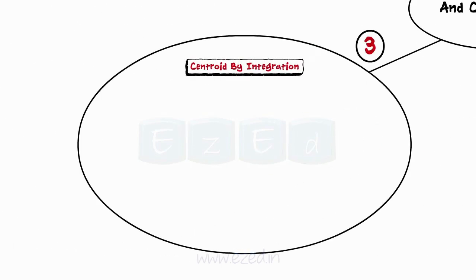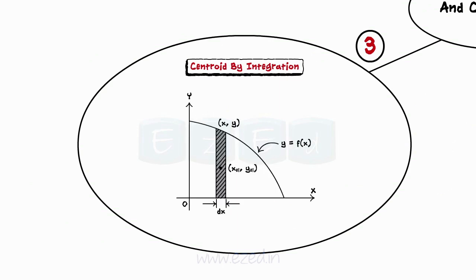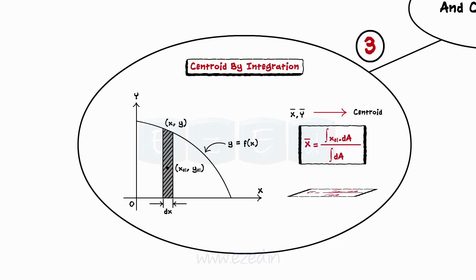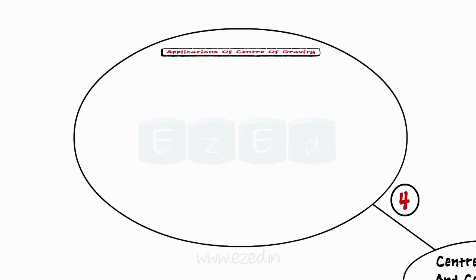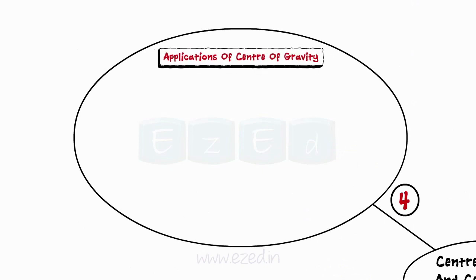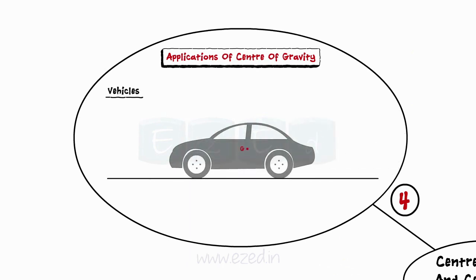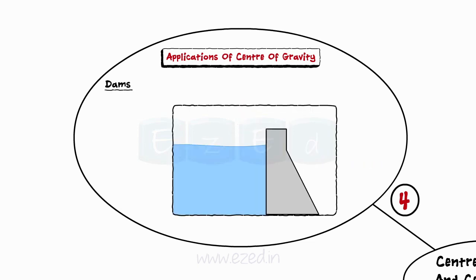Then, we learned to find the centroid of an area using integration. For some figures bounded by curves, we use the integration approach to find the centroid. If x-bar and y-bar are the coordinates of the centroid of the entire plane area, then we can use the following relations to find them using integration. Finally, we learned about some applications of center of gravity: vehicles should be designed with center of gravity at minimum distance from the ground to avoid tipping, and a dam is designed so that the center of gravity lies within the middle one-third of the base.